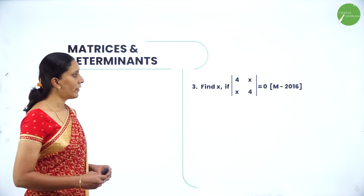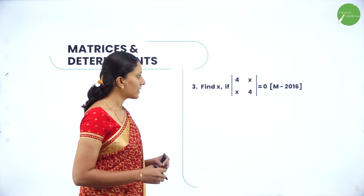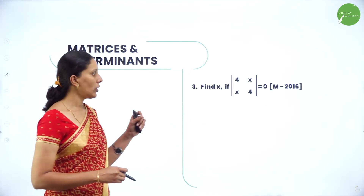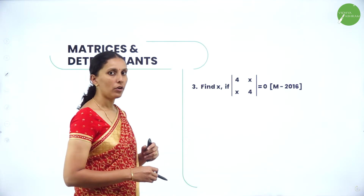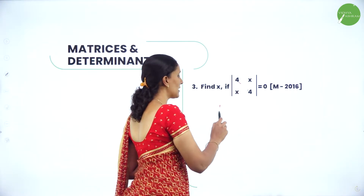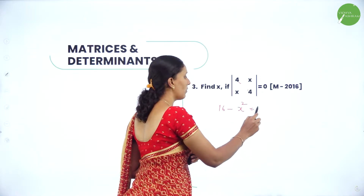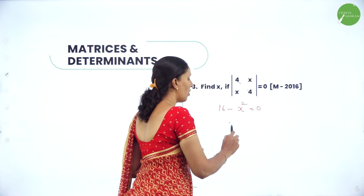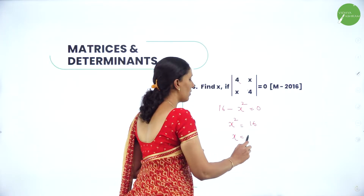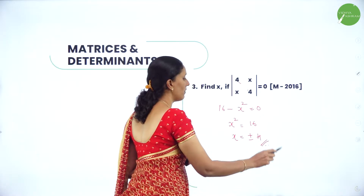Next, find x if the determinant of [4, x; x, 4] equals 0. The determinant of a 2×2 matrix gives 4×4 minus x×x equals 0, that is 16 minus x² = 0, so x² = 16, and therefore x = ±4.